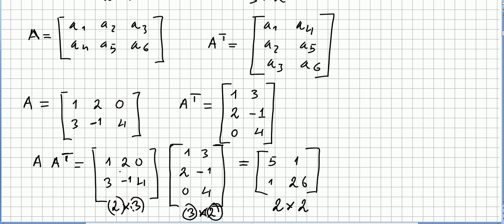So please check that 1 times 1 is 1, 2 times 2 is 4, and this is 0, so that's 5, right? 1 times 3, 3 minus 2, right? So 3 minus 2, that's 1, 1 and 26, so that's A times A transpose.